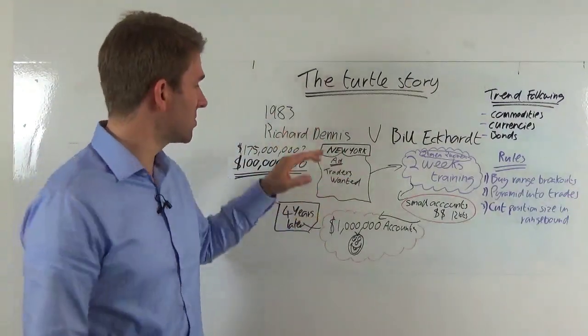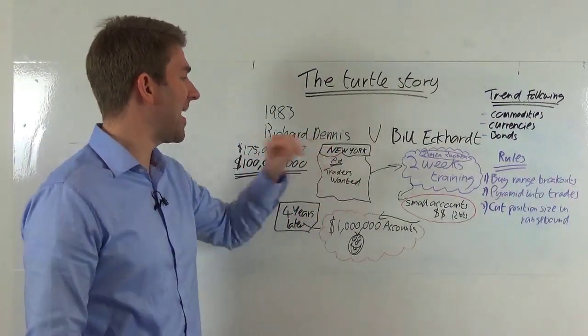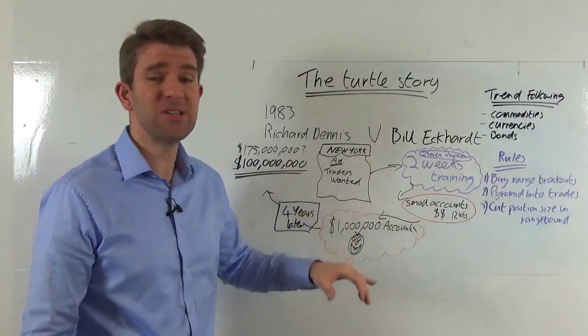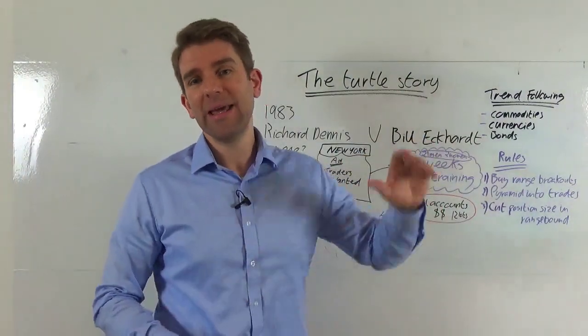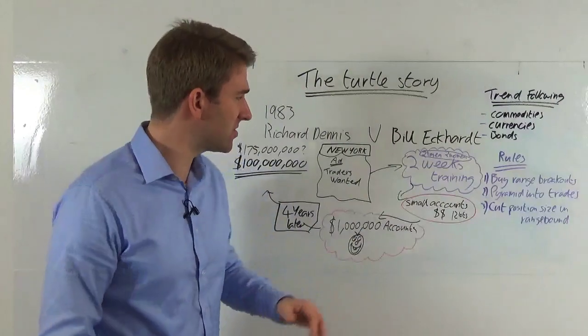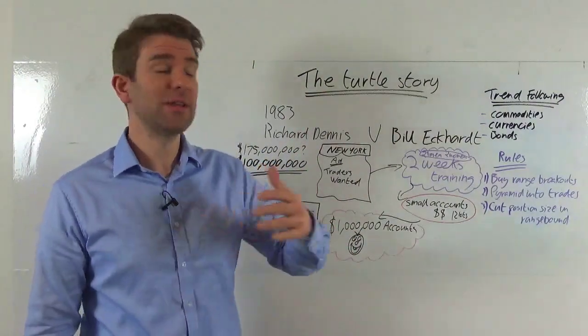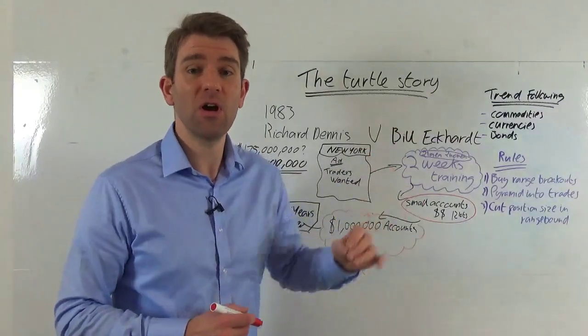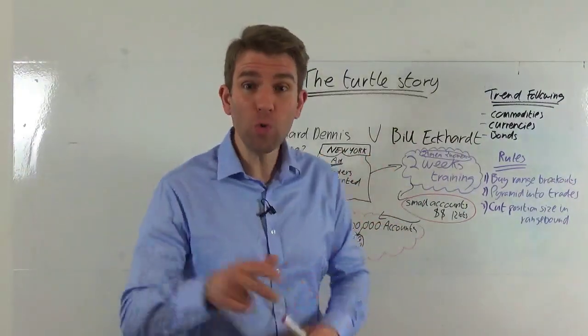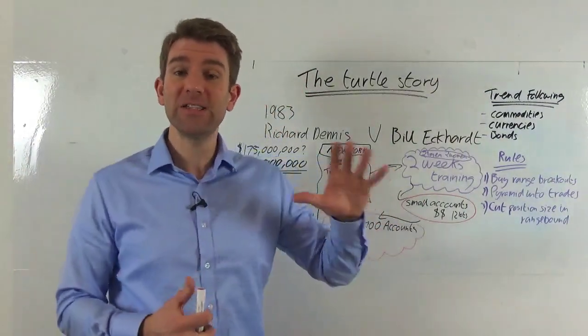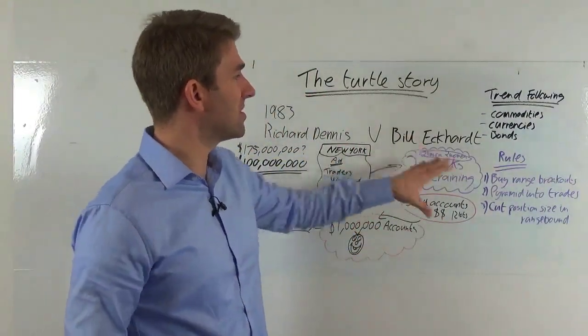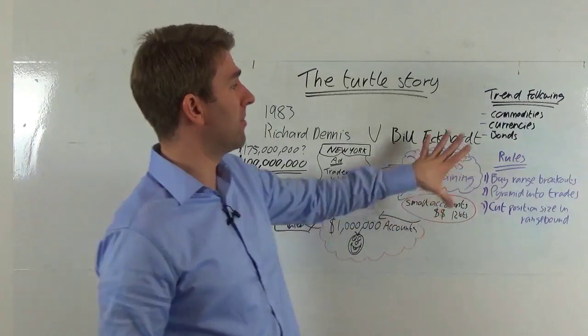Richard Dennis put an ad in the New York Times and the Washington Post that said 'traders wanted.' He had multiple applicants and ultimately whittled it down. He took 21 men and 2 women to Chicago and trained them for two weeks—just two weeks—basically training them on the rules of his system.